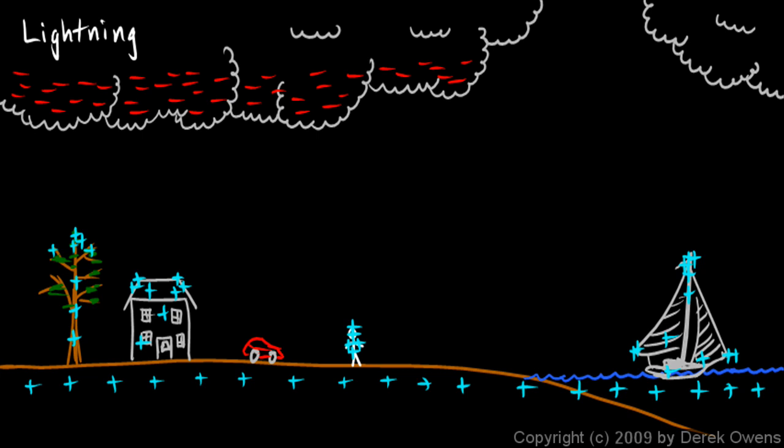The electrons in the cloud are negative and they're attracted to the positive objects on the ground. If the force of attraction is strong enough, the electrons will jump across the gap and that is a lightning bolt. So these electrons come flying down and each of these is a lightning strike.